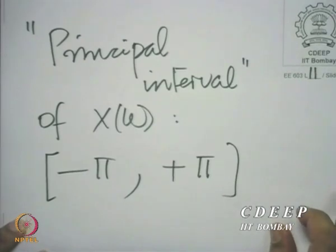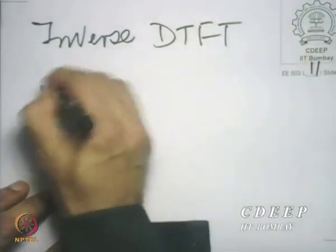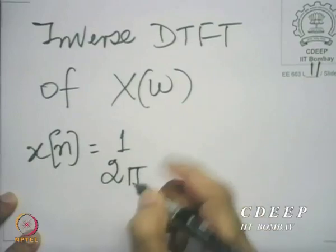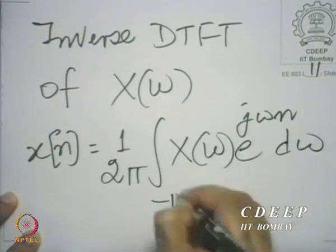We are also seeing the inverse discrete time Fourier transform. We have seen that you can reconstruct x[n] from X(omega). We also looked at a very important property of convolution. We saw that if you convolve two sequences, each of which has a discrete time Fourier transform, and if the convolution also has a discrete time Fourier transform, then there is a beautiful relationship between the convolution and the two sequences in the Fourier domain — namely, when you convolve two sequences, their discrete time Fourier transforms are multiplied.